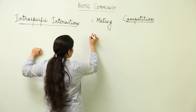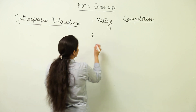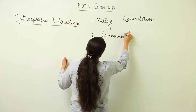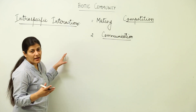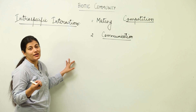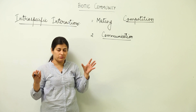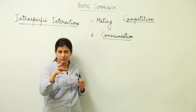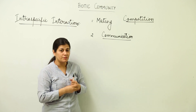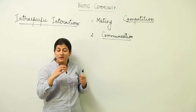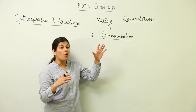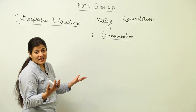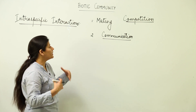Moving further, we have the intraspecific interaction of communication. Species within themselves have a mechanism of communication. An example of auditory communication is seen in birds. Have you ever witnessed a scenario where a bird's group is being attacked by a predator — say a snake — and they make a lot of noise? They are sending auditory communication to their species, to their friends and relatives, that there is danger.